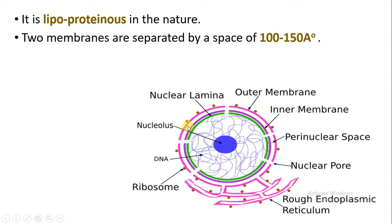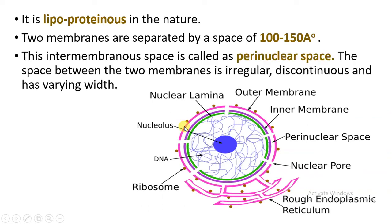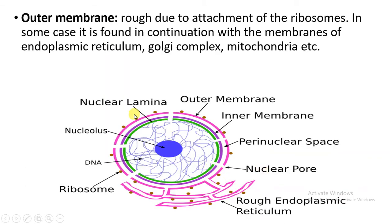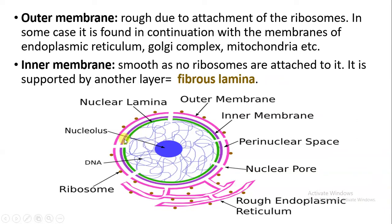When we talk about both membranes, the space which is present between the outer membrane and the inner membrane is about 100 to 150 angstrom. This space is also called as perinuclear space, which is kind of irregular or discontinuous with varying width. Further, the outer membrane is rough because there is presence of ribosomes attached on the surface, and the outer membrane is always in continuation with the endoplasmic reticulum.